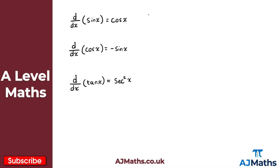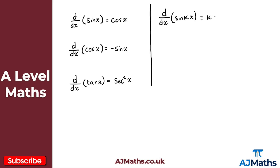Now we can extend these results. Consider what happens if we differentiate something of the form sine kx, where we have a constant k in front of the x. In this case the result is similar, but we multiply k in front: d by dx of sine kx gives k cos kx.